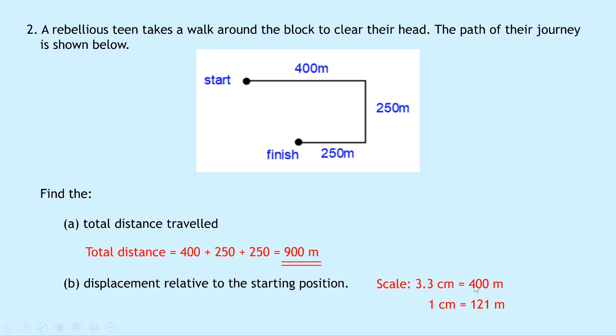And we find that by dividing 400 by 3.3 to get 121. So 1 centimetre is 121 metres. And then what we need to do is measure the distance from the start to the finish point with a ruler. And we can then use our new scale to work out what that size is in metres. So we're drawing our line from start to finish. We can then measure that distance. And if you do that, you should find a length of 2.3 centimetres.